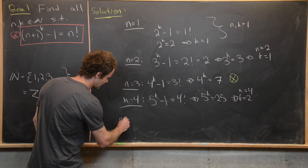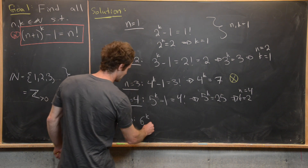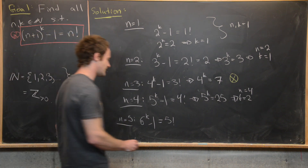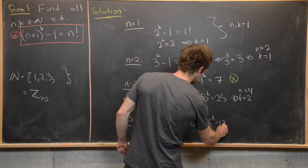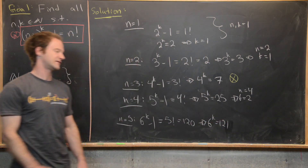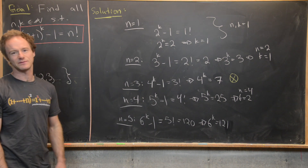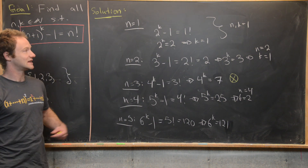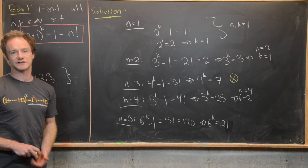For n=5, we get 6^k - 1 = 5! = 120, so 6^k = 121. The right-hand side is odd and the left-hand side is even, so there's no solution. We can probably guess we need n to be even for any solution. We will now claim and prove that these three solutions are our only solutions.